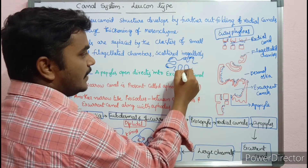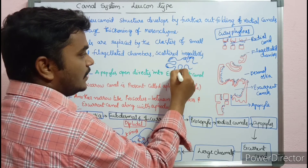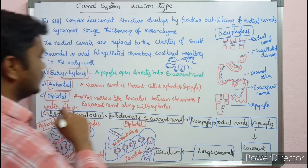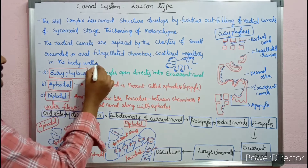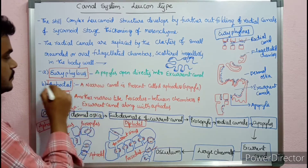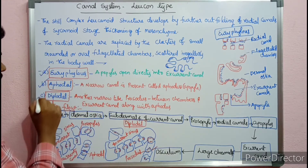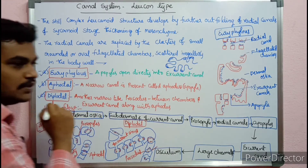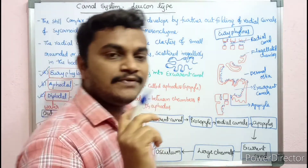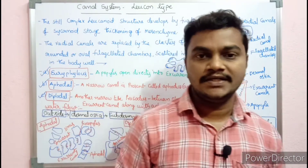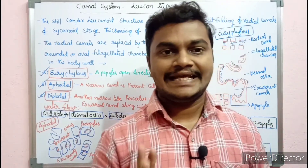The apopyles are of three types: Euripylous, Aphodal, and Diplodal. So, Euripylous, Aphodal, and Diplodal are the three types of apopyles in the Leuconoid canal system.